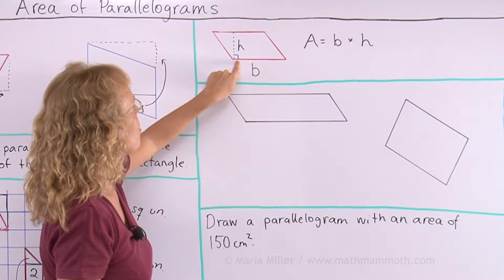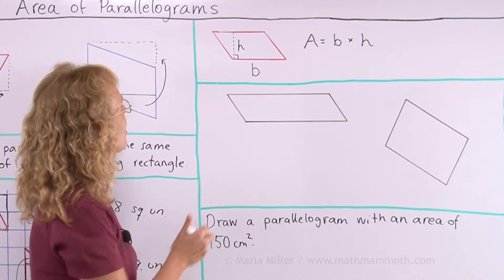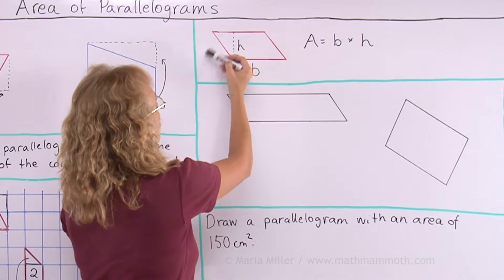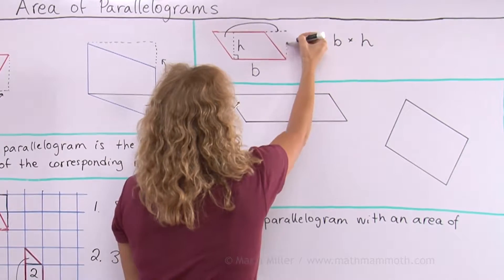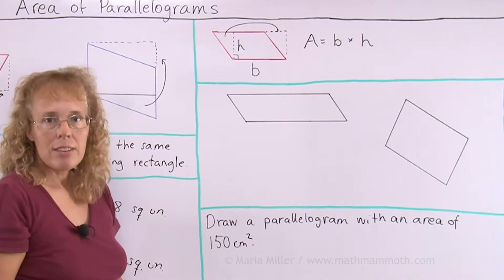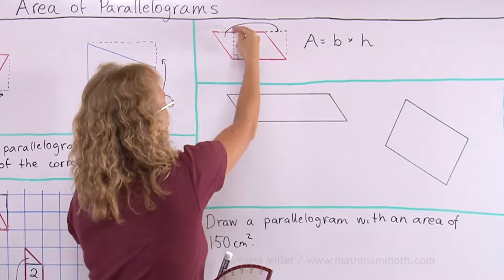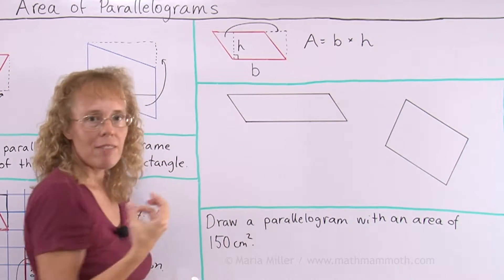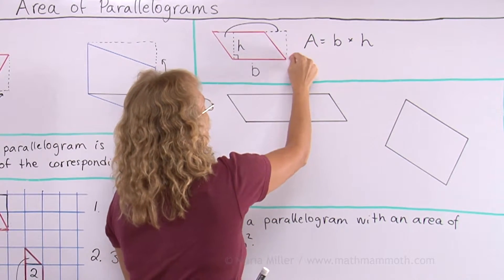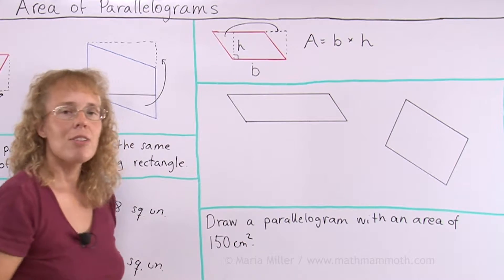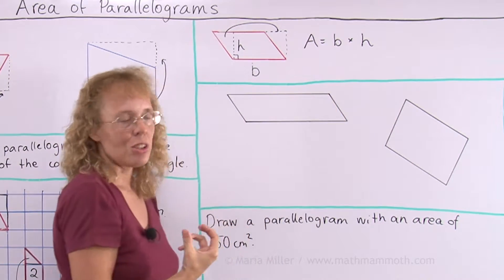And it is from base to the opposite side. You can also see that here I have this triangle that I would cut off and move. If you think of the resulting rectangle, the rectangle has sides B this way and H this way. So the area of that corresponding rectangle is calculated with base times height, B times H. That's why for the parallelogram we use the same idea — we just call this H the altitude.